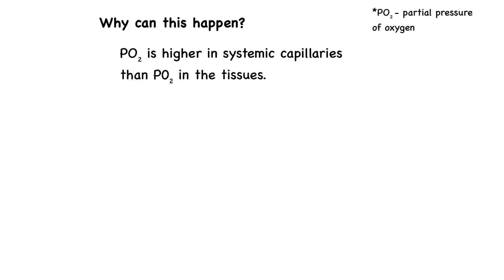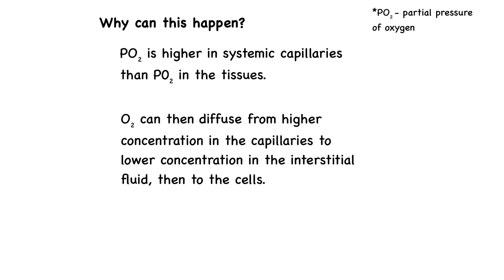Why can this happen? The partial pressure of oxygen in the blood that is pumped through the systemic capillaries is higher than the partial pressure of oxygen in the tissues. This is because that blood has picked up oxygen from the lungs and is freshly oxygenated as it travels to the tissues. This allows oxygen to diffuse from higher concentration in the capillaries to lower concentration in the cells. While this happens, the opposite is true for the partial pressure of carbon dioxide, and this allows carbon dioxide to travel from the cells to the interstitial fluid and then back into the capillaries.